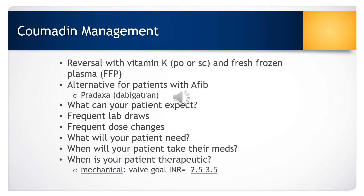The therapeutic effects of Coumadin can be reversed with the administration of vitamin K, and a patient can also receive fresh frozen plasma. There are alternatives for patients with atrial fibrillation, such as the medication Pradaxa. Patients going home on Coumadin should know they will have labs drawn frequently — initially once or twice a week, eventually tapering to once a month. They may need frequent dose adjustments and should have a pill cutter. They should take their medication in the evening so that after morning labs are drawn and the provider calls with results later that day, they can adjust their dose accordingly.